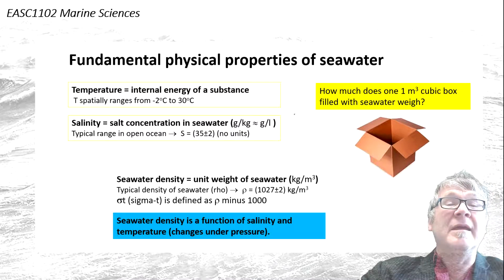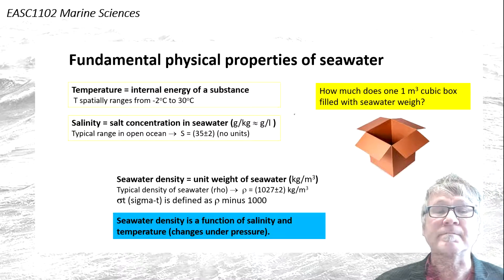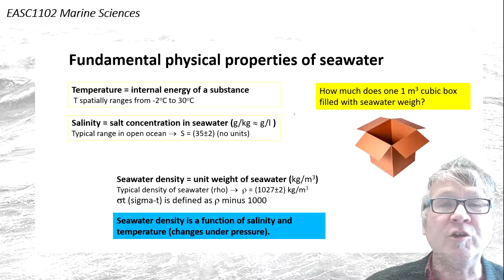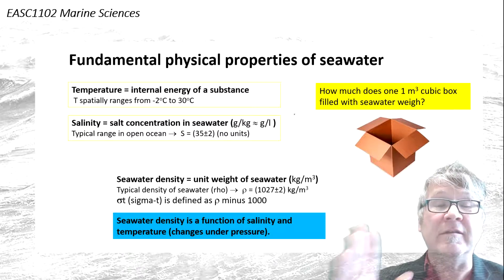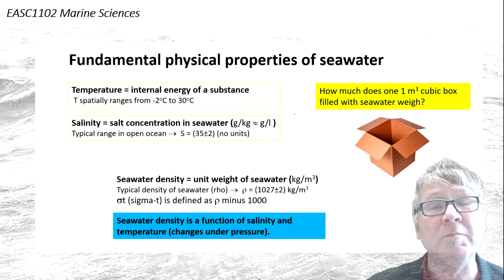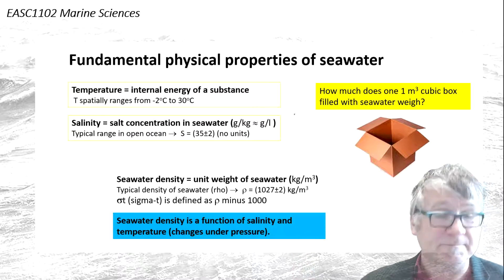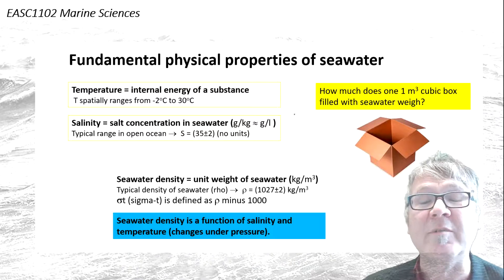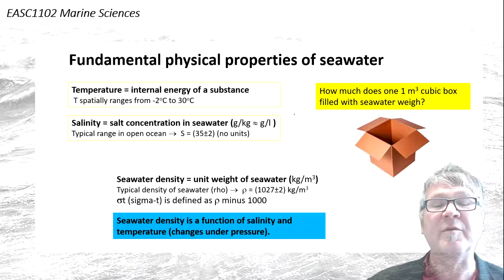Another property is the so-called seawater density. The density is simply the weight of one cubic meter of seawater — imagine a one-by-one-by-one meter box. The unit is kilograms per cubic meter, and the typical density is 1027 plus or minus 2 kilograms per cubic meter.